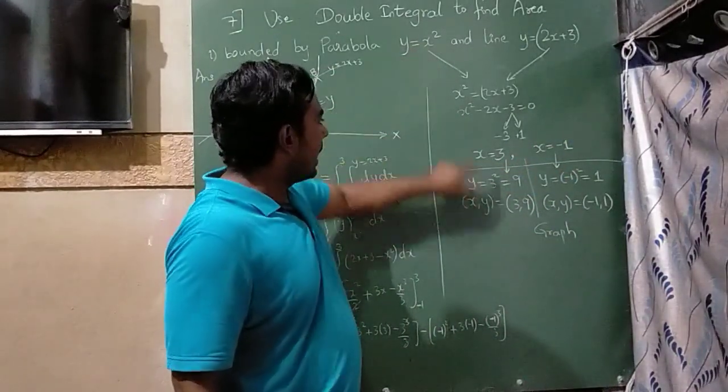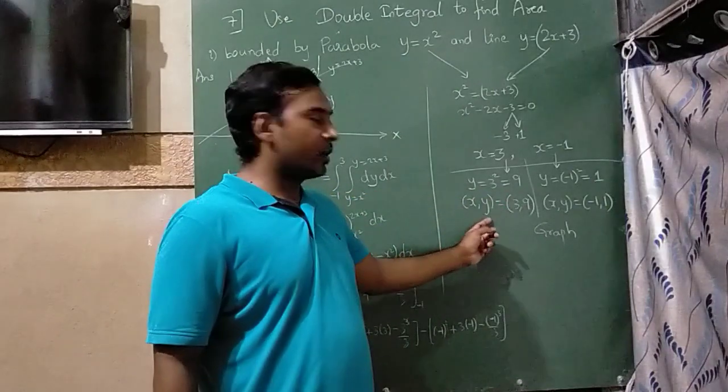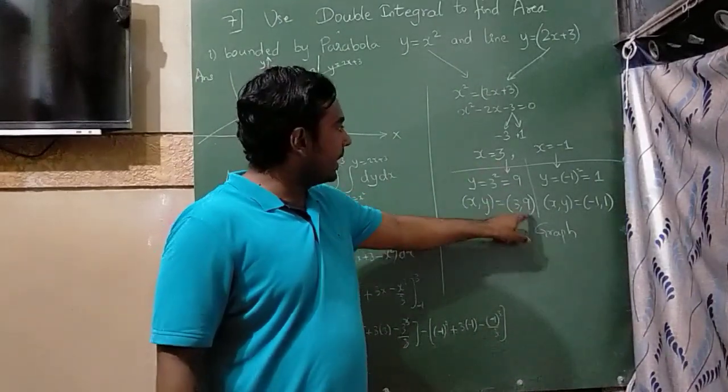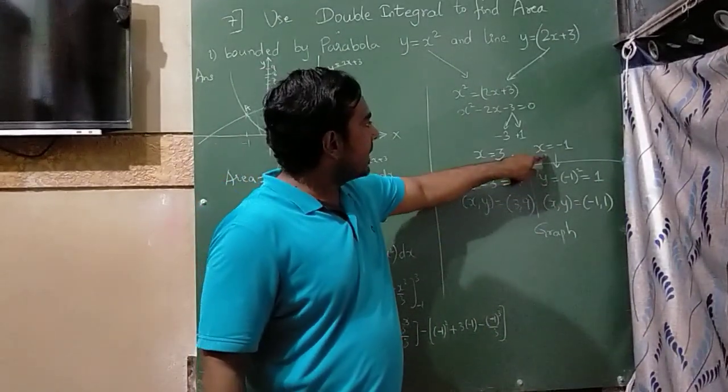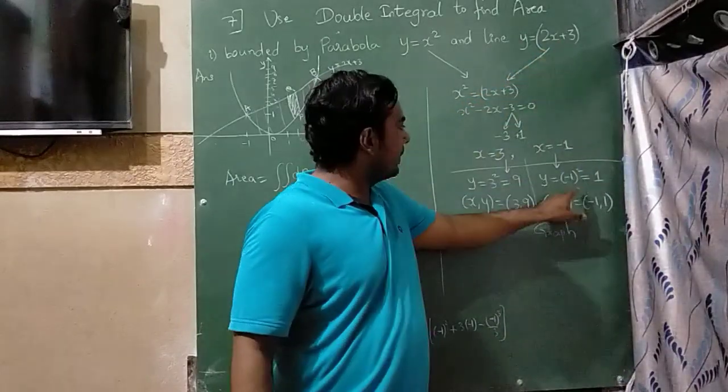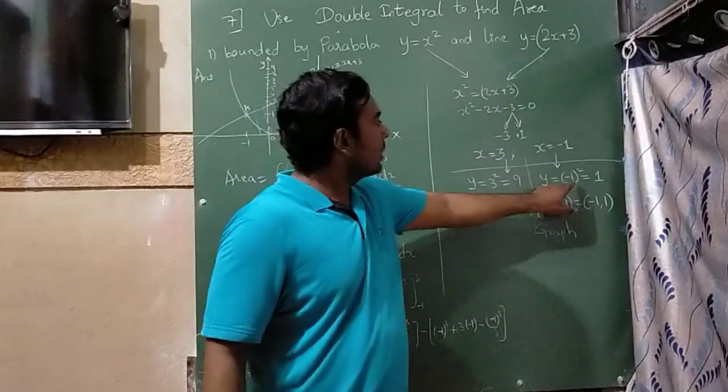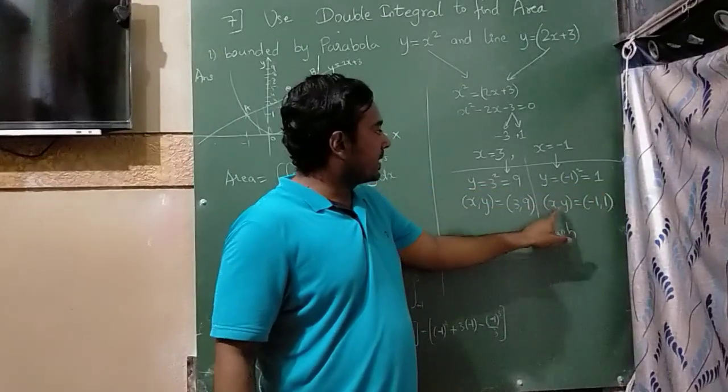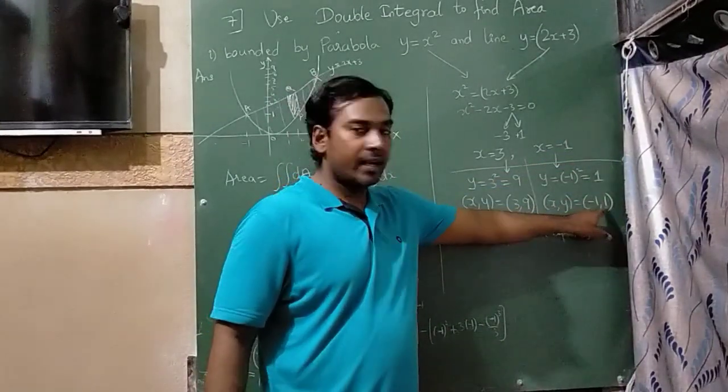Substituting this value here I will get 9, so x and y coordinates will become 3 and 9. If I substitute this x value here, I am going to substitute here, so I will get 1. So x and y value will become minus 1 and minus 1.